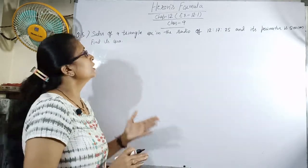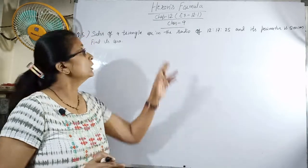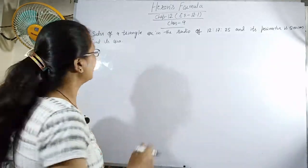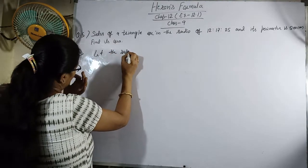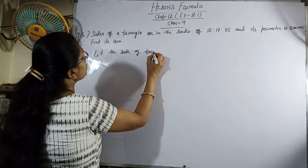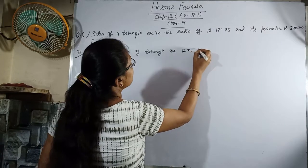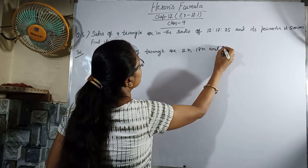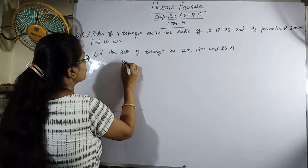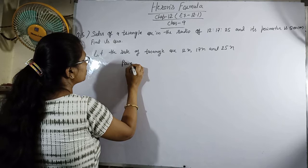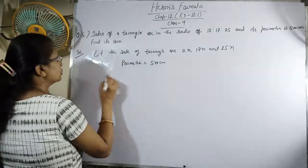Let the sides of triangle be 12x, 17x, and 25x. Perimeter is given as 540 cm.